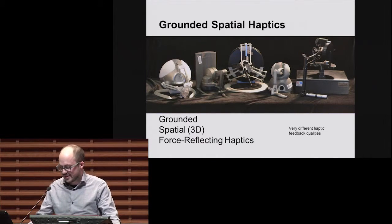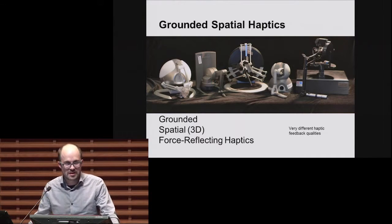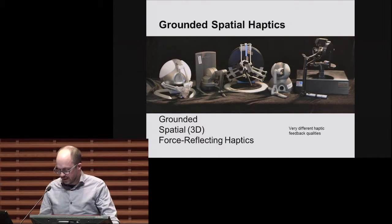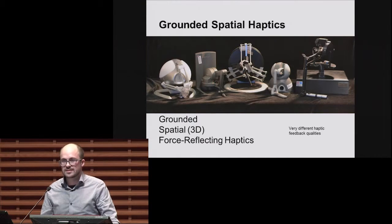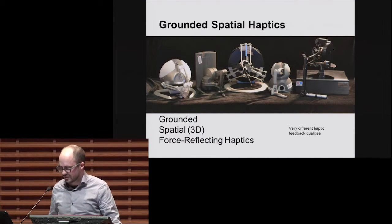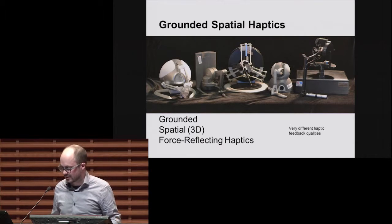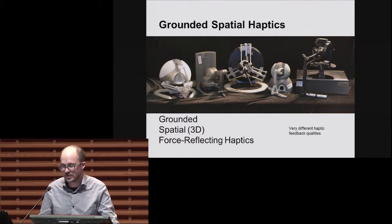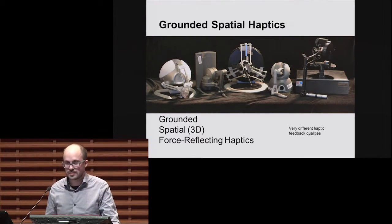What signifies them are that of course they are grounded, which means they sit on your table and you cannot move them around. They are spatial in that the manipulandum or handle is moved in space and tracked in space with at least three degrees of freedom. And they can reflect the directional force onto the manipulandum that is used to give haptic feedback.